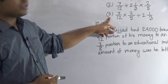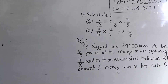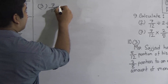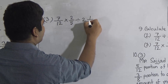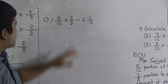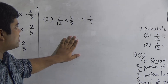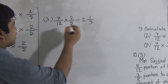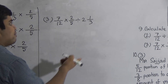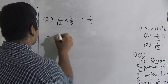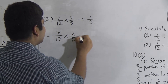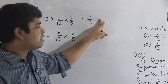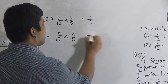Next, we shall solve question number 3. Dear student, it is similar to question number 2. Here: 7/12 multiplied by 2/5 divided by 2 and 1/3. Dear student, here one simplification is given. So at first we notice if any number is a mixed fraction or not. If mixed fraction, then at first we convert that mixed fraction into improper fraction. Here you notice the last fraction is a mixed fraction, so we convert it to improper fraction first. We write: 7/12 × 2/5 ÷ 7/3, where the integer part 2 is multiplied with denominator 3 to get 6, and 6 plus 1 gives 7, so we write 7 by 3.